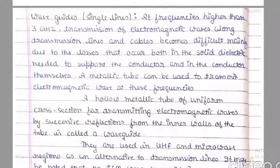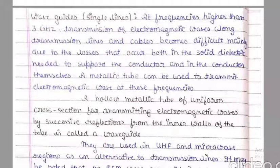We have discussed the discovery of microwaves, the frequency bands categorized into different designations, and the applications of microwaves. Now we move forward to talk about wave guides. For the transmission of microwaves, we cannot use normal transmission cables or transmission lines, because microwave frequencies are in the GHz range, and at GHz levels, transmission lines result in very high power losses. So for microwave transmission, we use a different type of device called a wave guide.